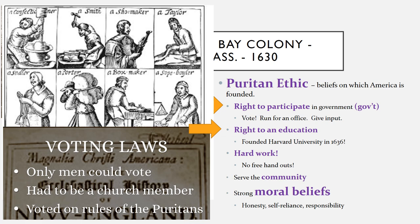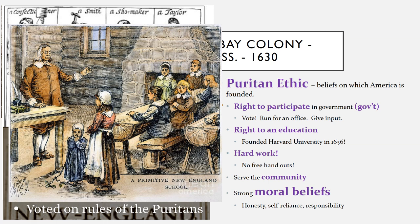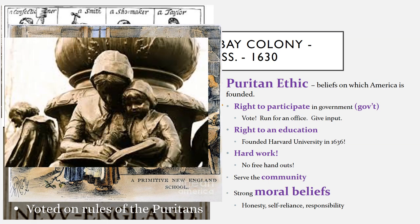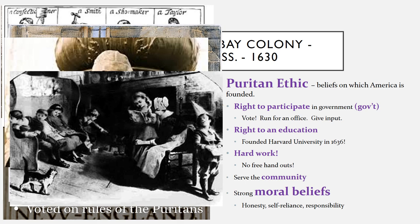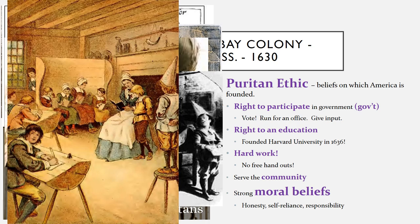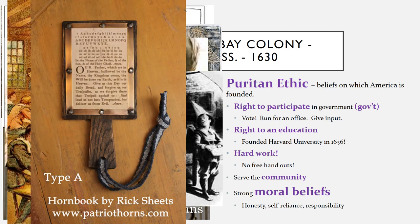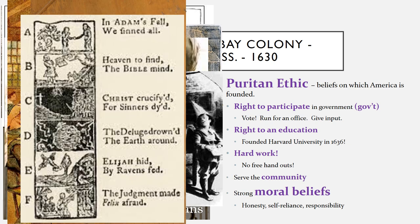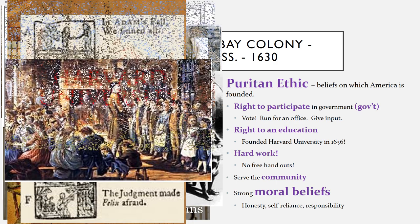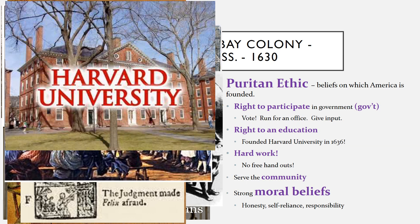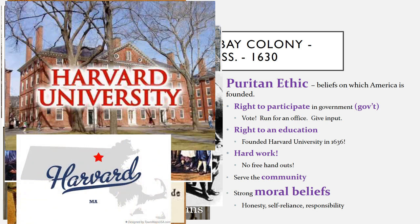Another part of the Puritan ethic that we take from here in America today is the right to an education. Puritans wanted their children to be able to read the Bible for themselves. Puritan children learned at home from their mothers and also went to local school together, where their teacher would teach them at different levels no matter their age. Many students learned their ABCs from a horn book they could hold in their hand. Harvard University, one of the very first colleges in North America, was founded in 1636 and is still a university located in Massachusetts today.